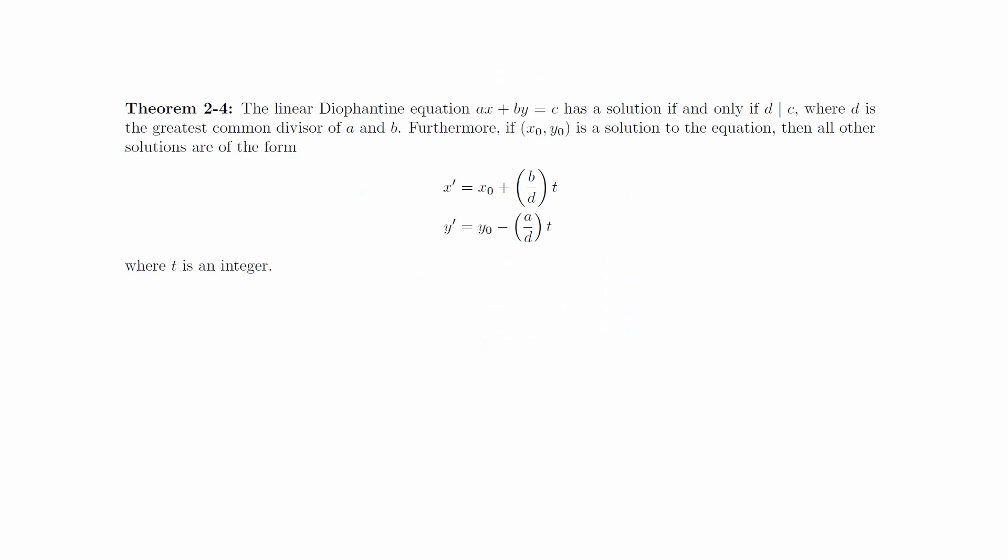This result is summarized in the following theorem. The linear Diophantine equation ax plus by equals c has a solution if and only if d divides c, where d is the greatest common divisor of a and b. Furthermore, if x0 y0 is a solution to the equation, then these equations give all the other solutions.